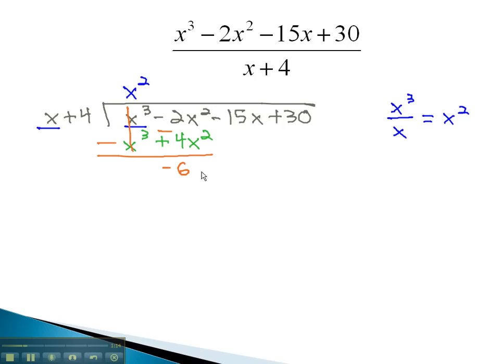The x cubes are gone, and we now have negative 6x squared, bringing down minus 15x.